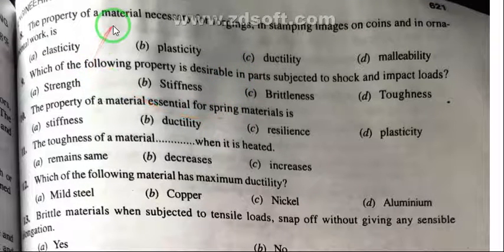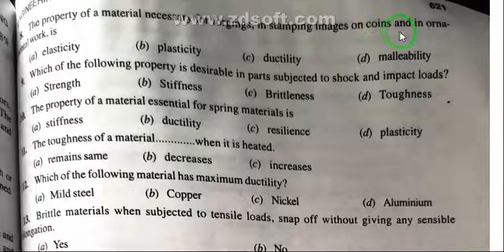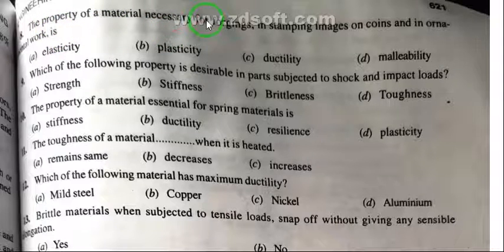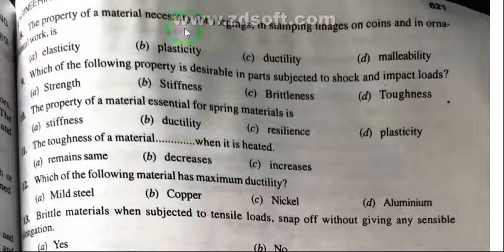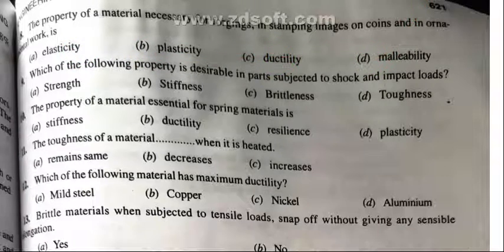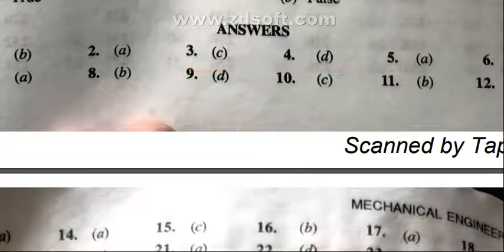Question 8: The property of material necessary for forgings, stamping images on coins, and ornamental work — elasticity, plasticity, ductility, or malleability? The right answer is malleability.